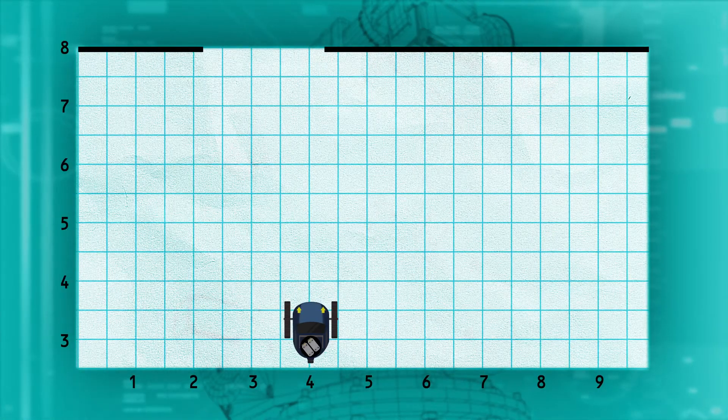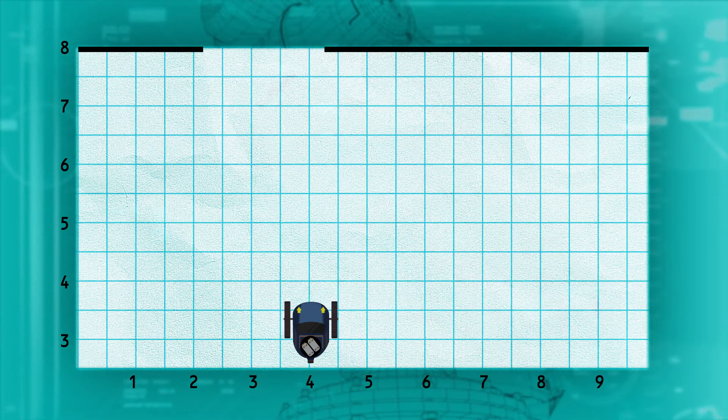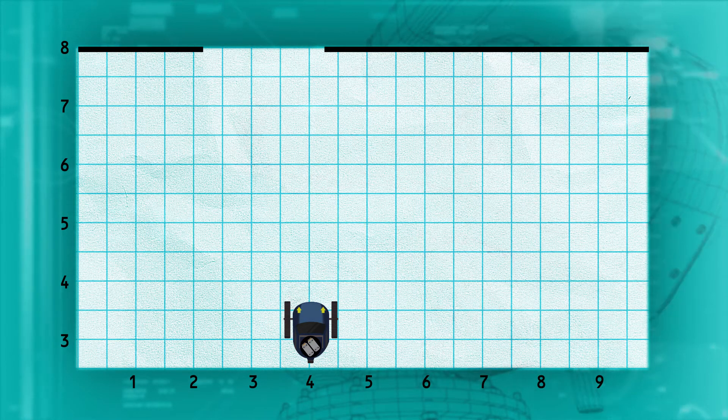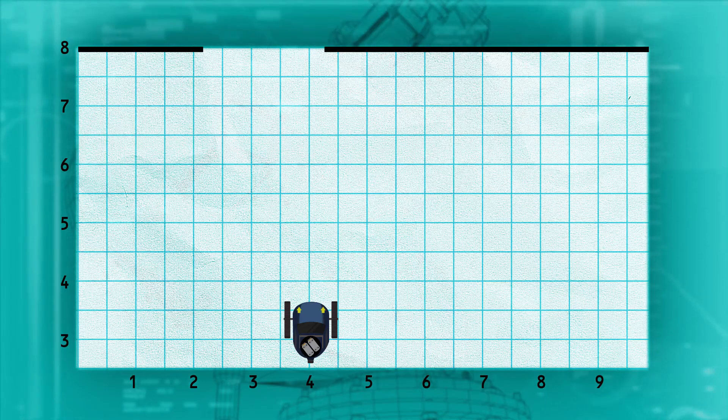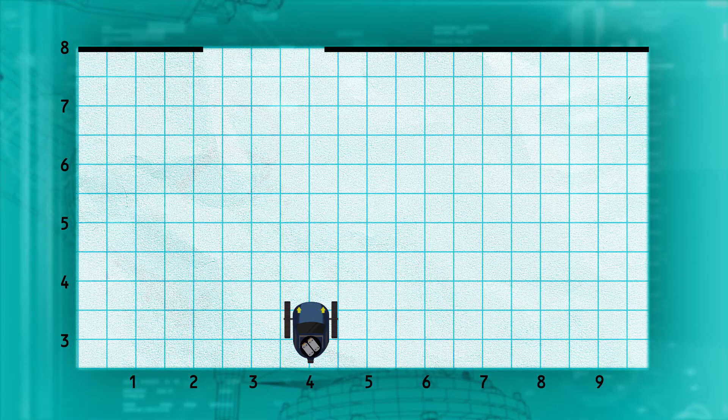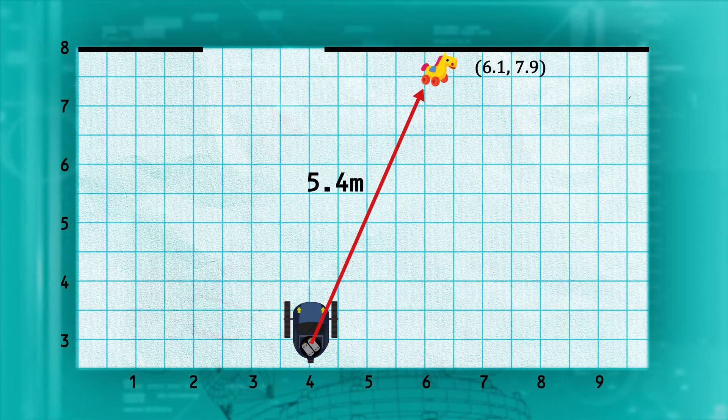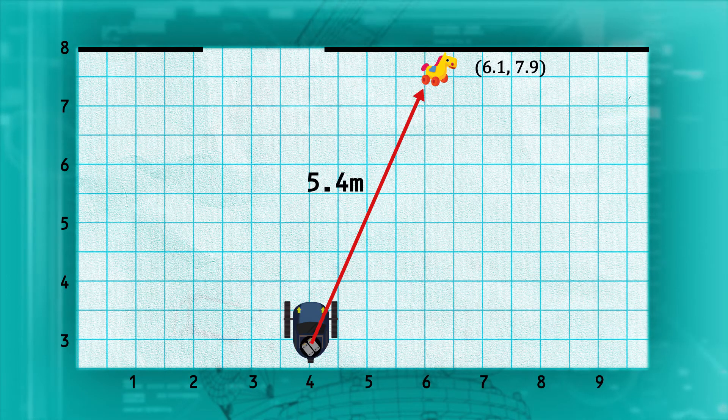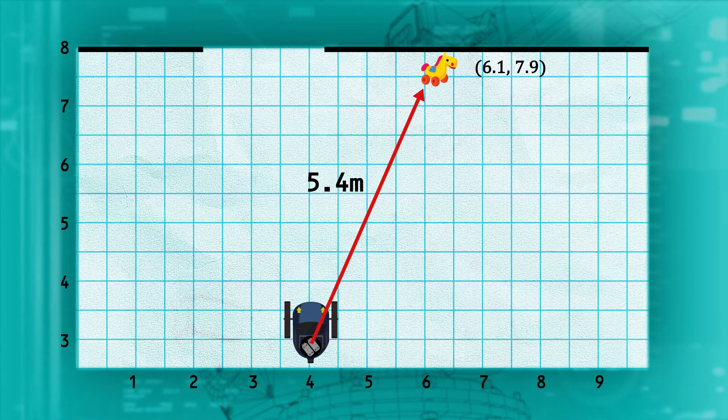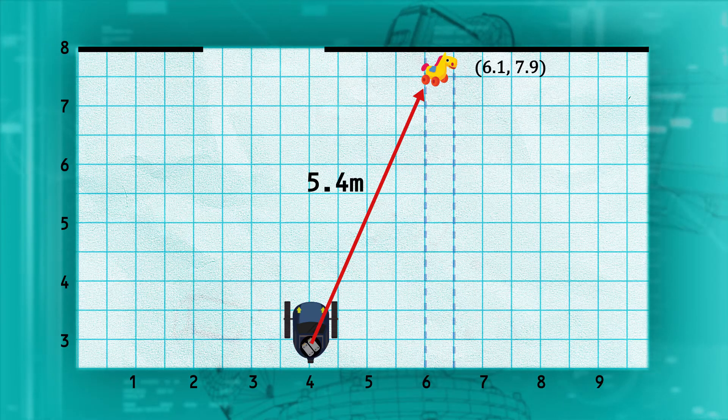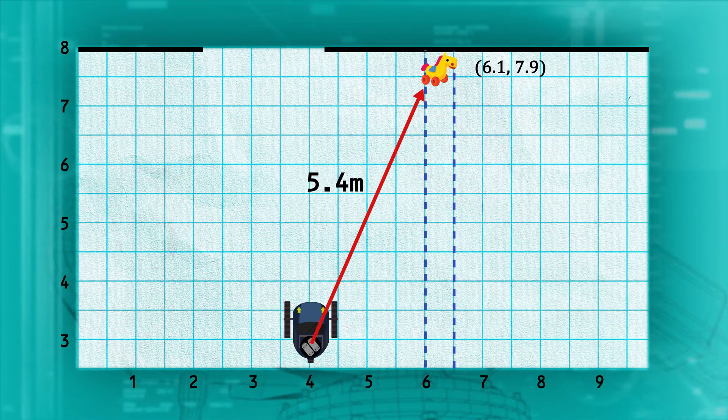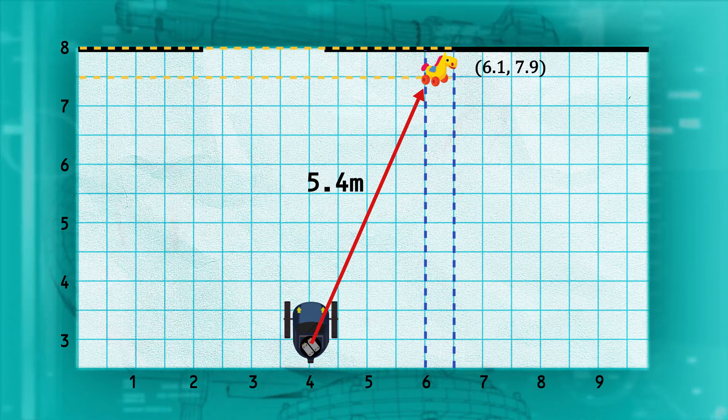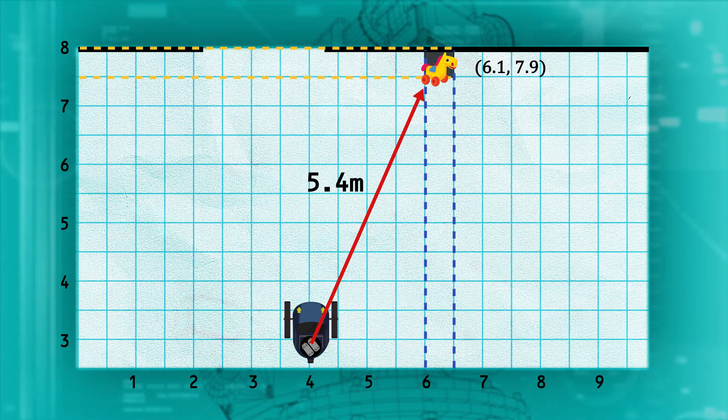If our robot senses a few objects to the north, how does the robot actually store this so it can use the data later? The easiest method is to simply store a grid. Imagine we make a grid with 50 centimeter by 50 centimeter cells. In our case, let's assume we had an object 5.4 meters away at a position of 6.1, 7.9. So we would mark the cell corresponding to the range 6 to 6.5 on x and 7.5 and 8 on y as having an obstacle.